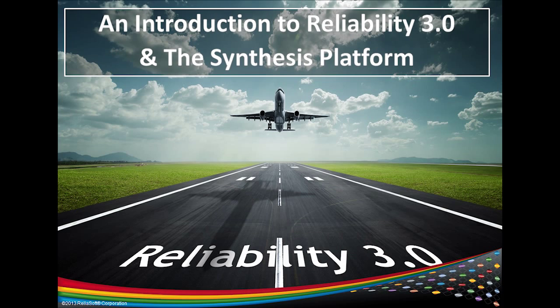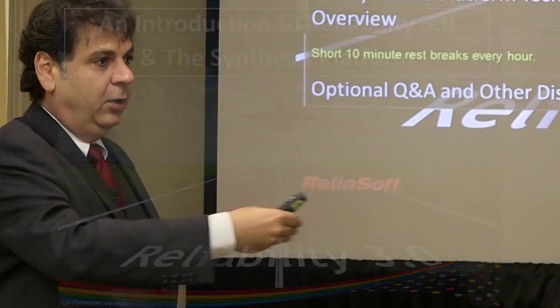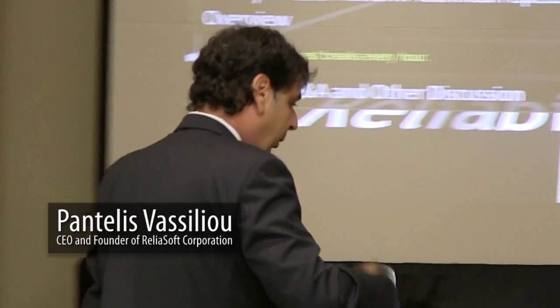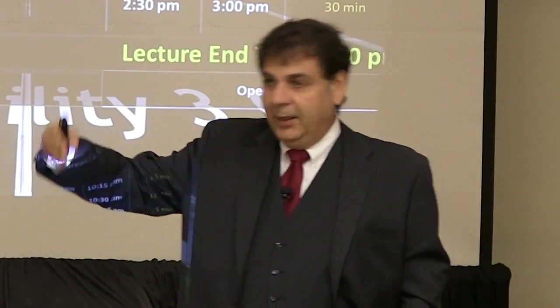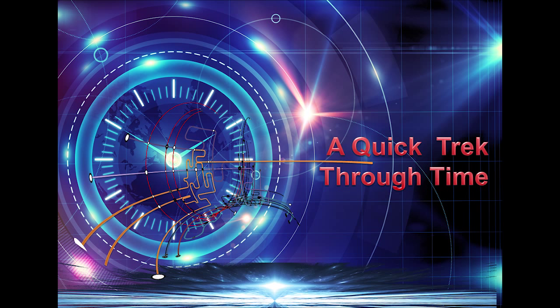The majority of my presentation is going to be what I call a step-by-step DFR example. All of it is going to take a product that we want to design, start out at the concept phase, go through the entire product development phase, and look at what are the things I need to be doing as a reliability engineer and how do I leverage them from step to step. Most of it is going to be an example-based approach. When I talk about reliability, I wanted to take a fun 10 minutes and do a quick history tour.